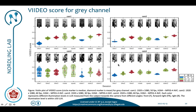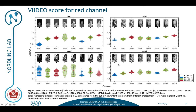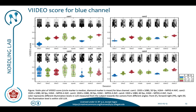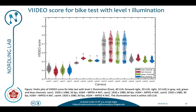If we now look at the red channel we have the same pattern, and if we go to the green channel we again have the same pattern, and for the blue channel we again have the same pattern. If we instead look at the bike test with illumination level one and plot all four channels together, we can see that the results are consistent. We have a slightly higher video score for the red channel and slightly lower for the gray, but otherwise it's more or less the same.